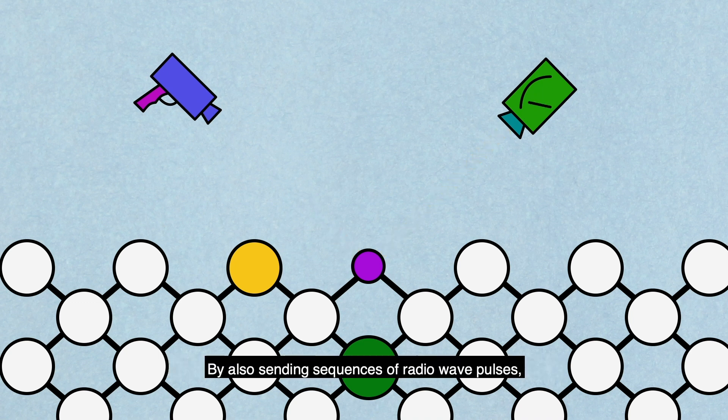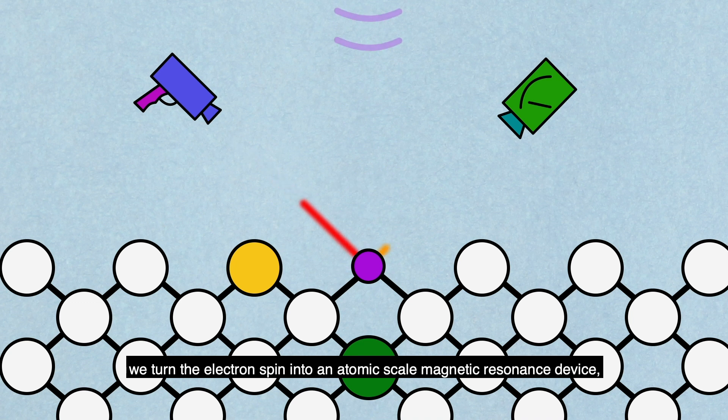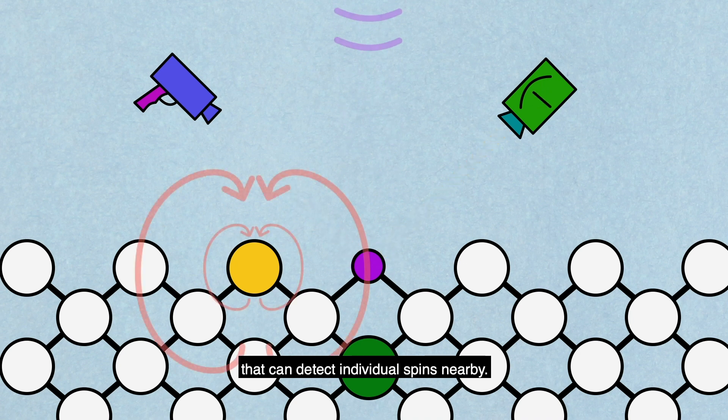By also sending sequences of radio wave pulses, we turn the electron spin into an atomic scale magnetic resonance device that can detect individual spins nearby.